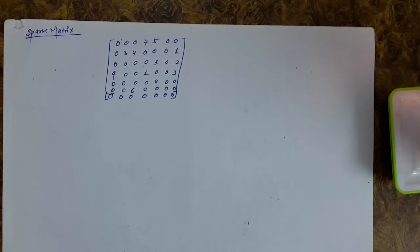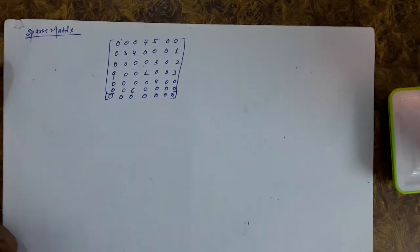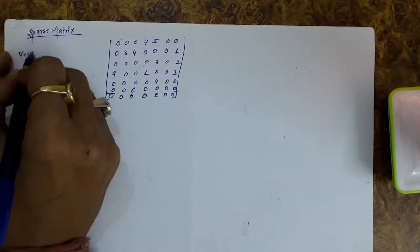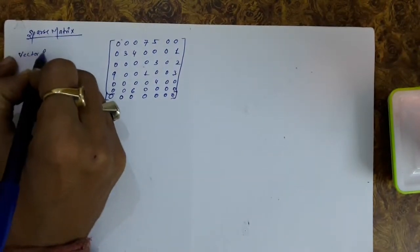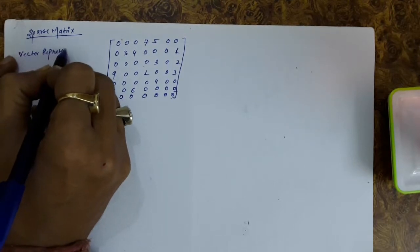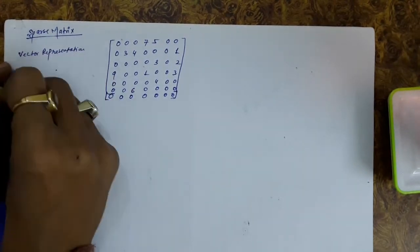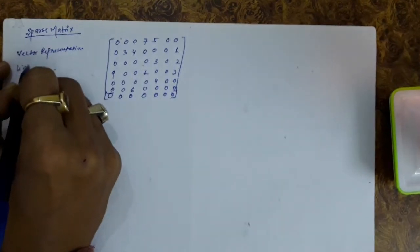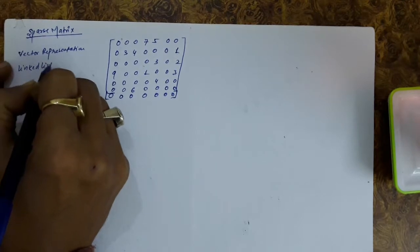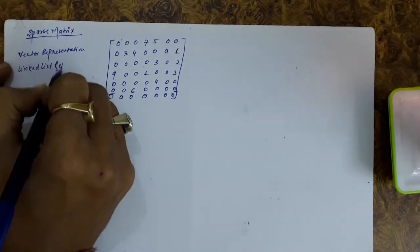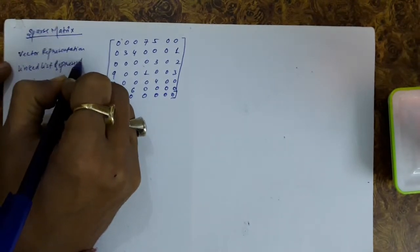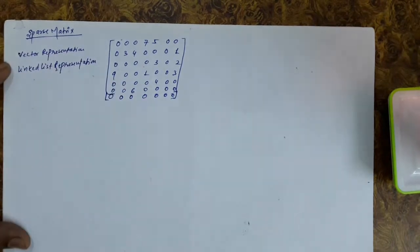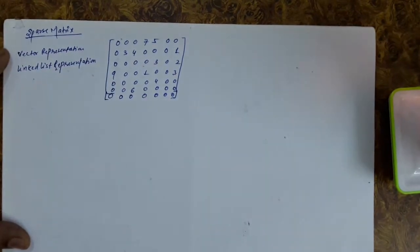So if you have to store this kind of matrix with some mechanism, we can employ two mechanisms here. One is by using a vector representation, and the other is a linked list representation.